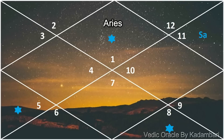For Aries, Saturn transiting from Shatabhisha nakshatra is in your 11th house and gives its 3rd aspect on the first house. The most important transformation is related to how you are treating yourself and taking care of yourself. This transit of Saturn from Shatabhisha is unveiling something about you, and as it aspects the first house, you'll realize your aims.